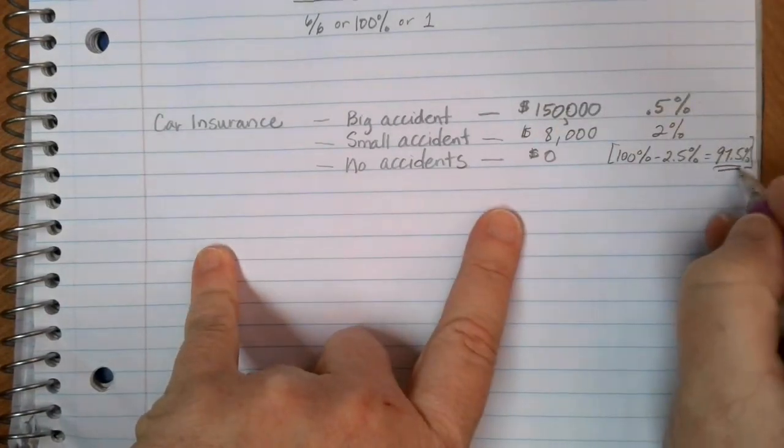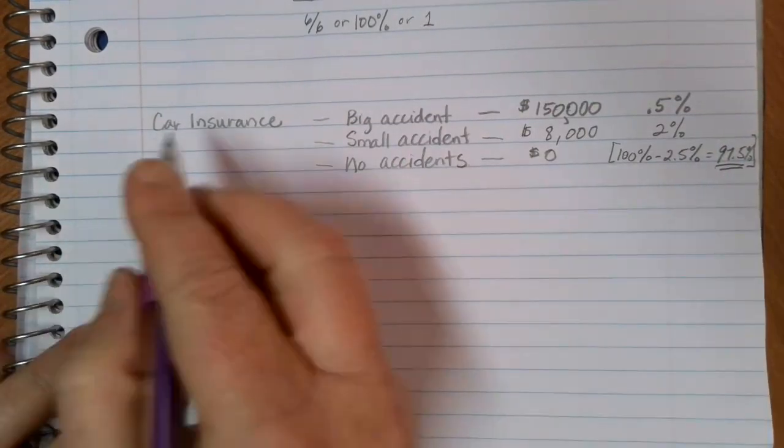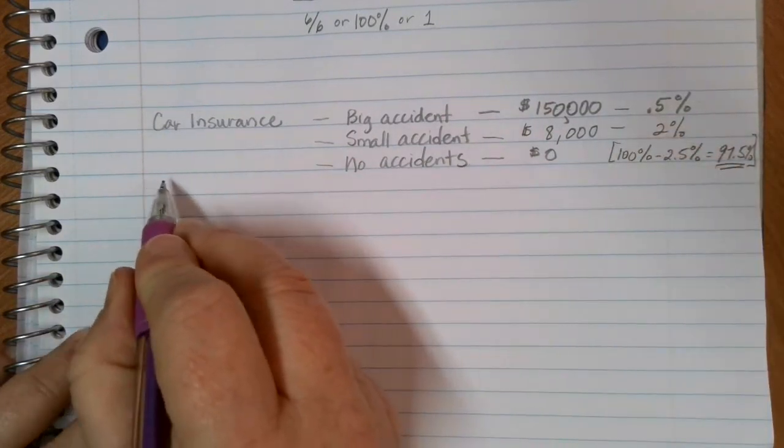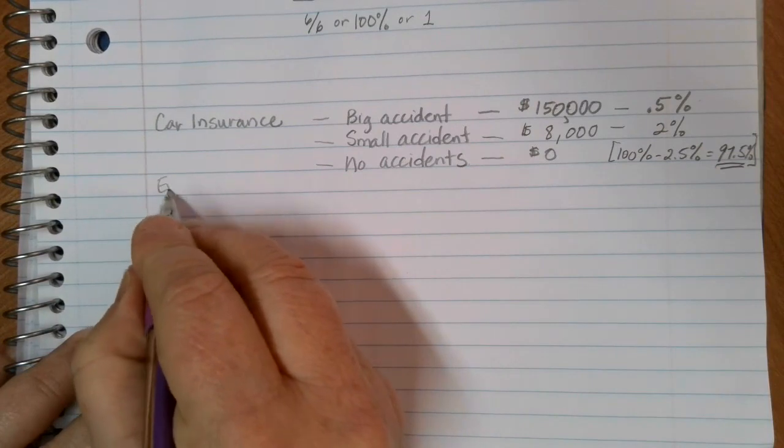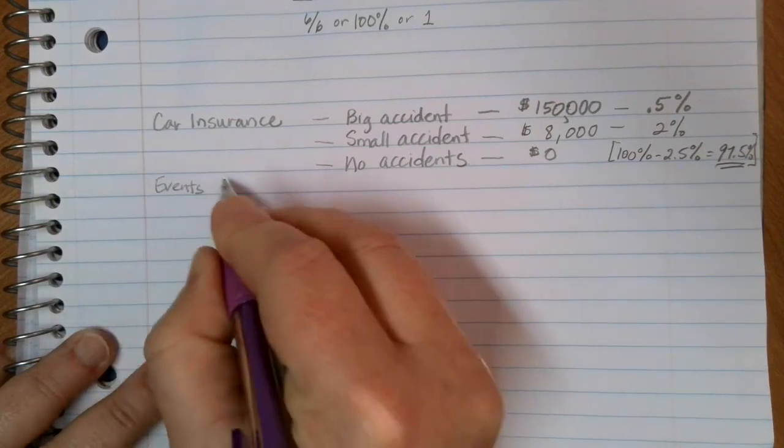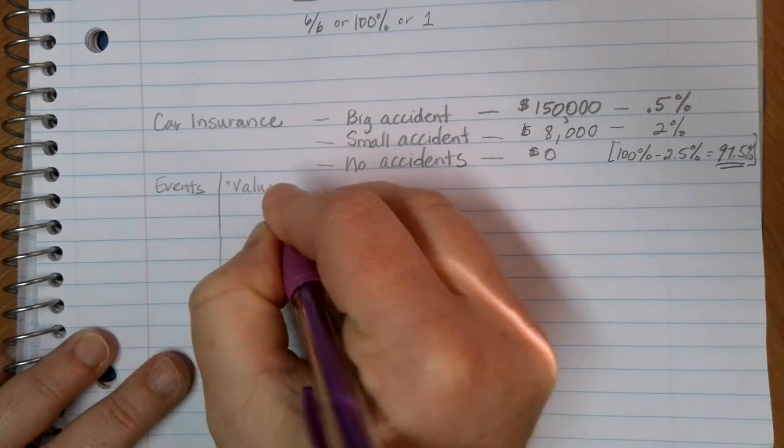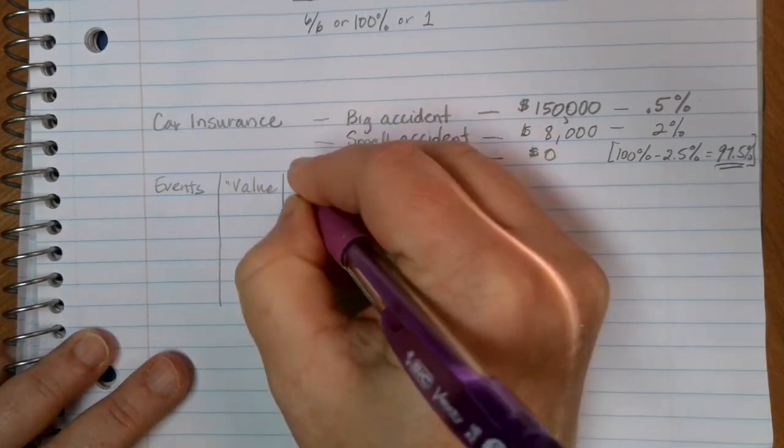this is essentially all that I have that's necessary, right? I have my events. I have my associated value. And I have my probability.